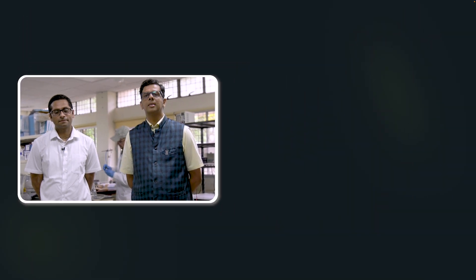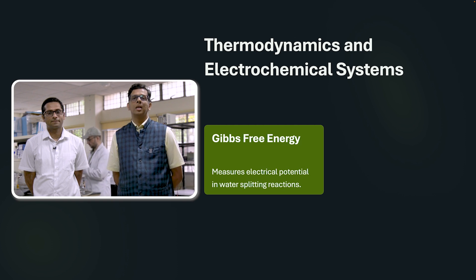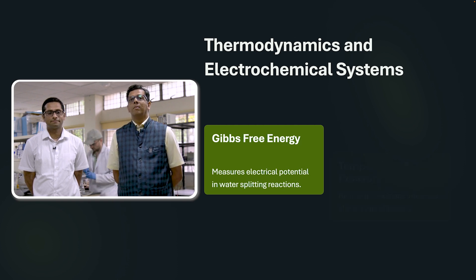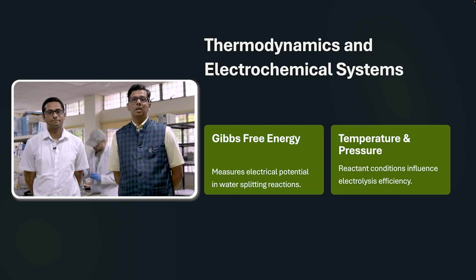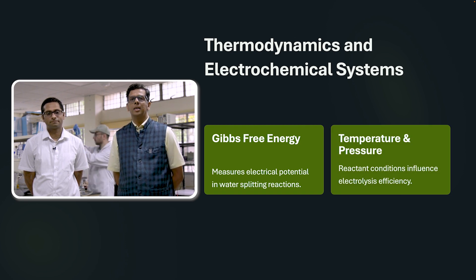Professor Amit then takes over. Once we understand the basic concepts of hydrogen, we will take this course ahead and understand the electrochemical system through the domain of thermodynamics. We will understand that the Gibbs free energy is nothing but the electrical potential available in electrochemical systems. We will also see that this potential gets altered when we supply reactant species at different temperature and pressure conditions.